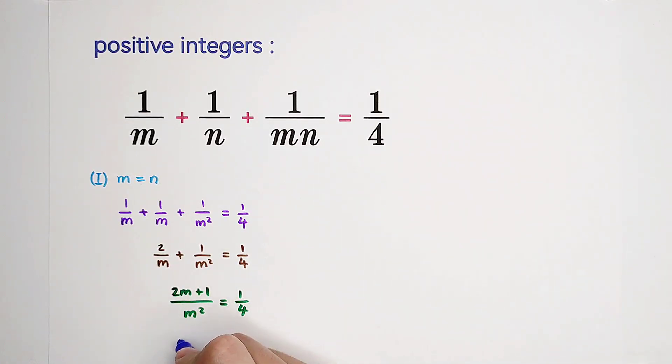And now we can acquire an equation about m and it is m squared minus 8m minus 4 equals 0. So we know that m is a positive integer. However, the two roots to this equation are not integers at all. So of course, they are not positive integers. So that means in this case, we don't have any positive integers. So no solution.